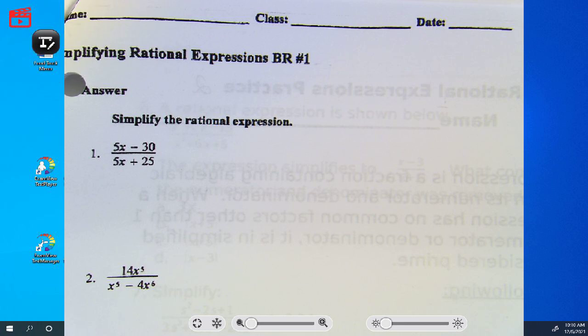Okay, so the first one. Because what you're factoring, is there a GCF? Is there a GCF in the numerator?